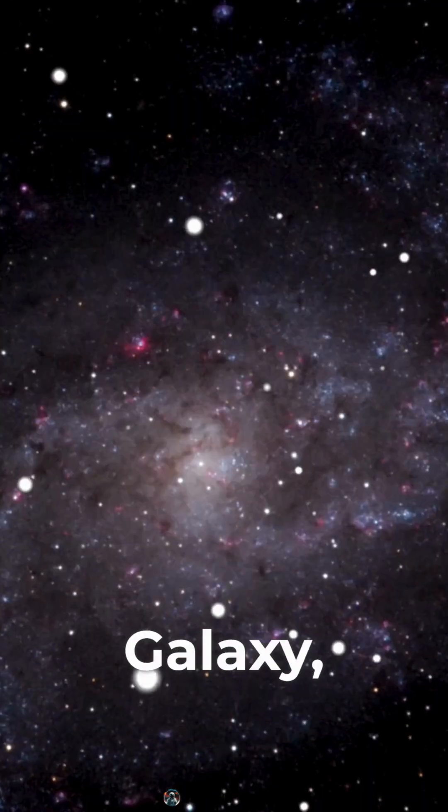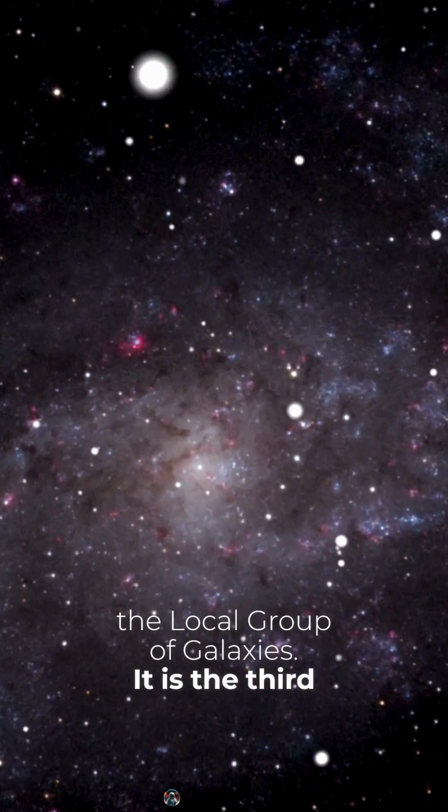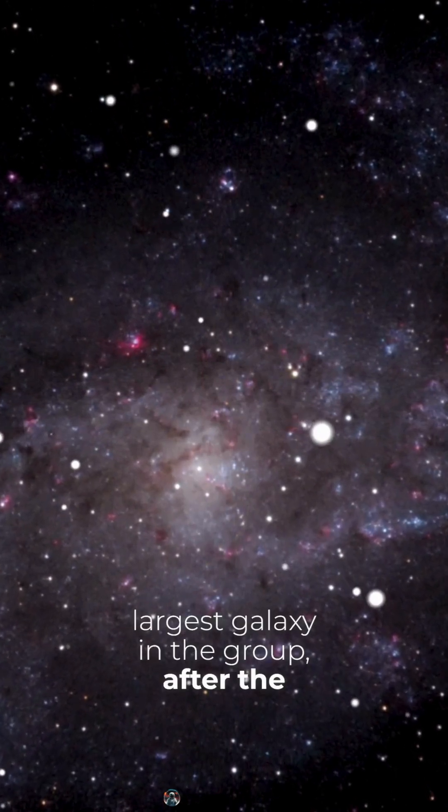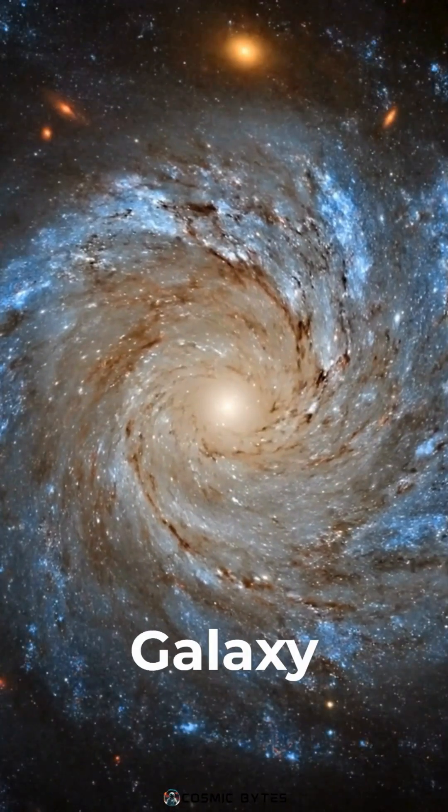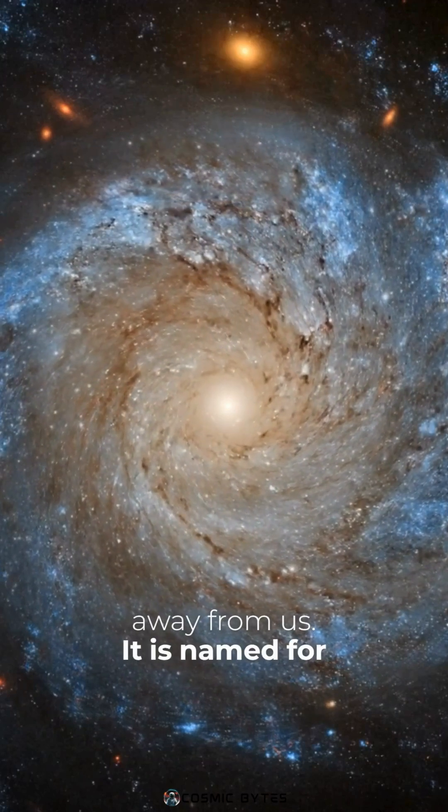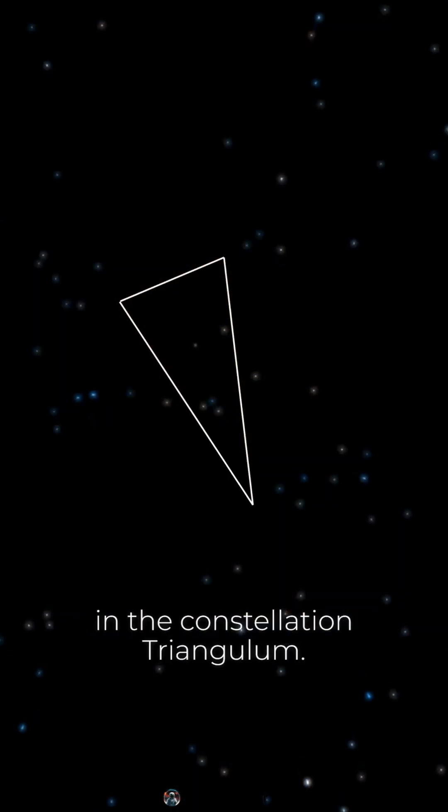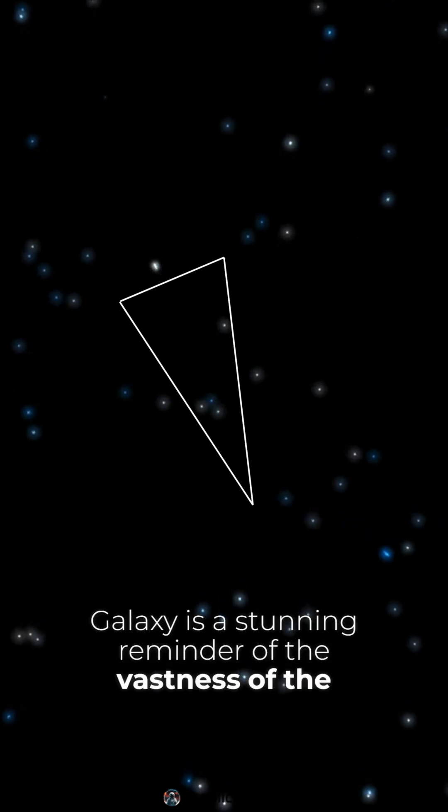The Triangulum Galaxy, also known as M33, is a member of the local group of galaxies. It is the third largest galaxy in the group, after the Milky Way and the Andromeda Galaxy. The Triangulum Galaxy is a spiral galaxy and is about 3 million light-years away from us. It is named for its location in the constellation Triangulum. The Triangulum Galaxy is a stunning reminder of the vastness of the universe.